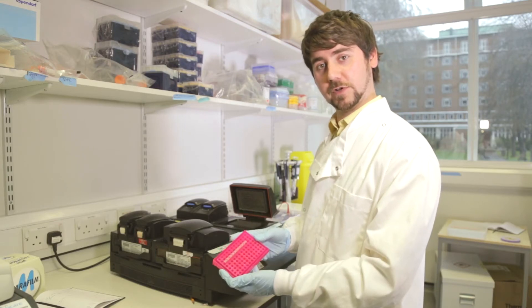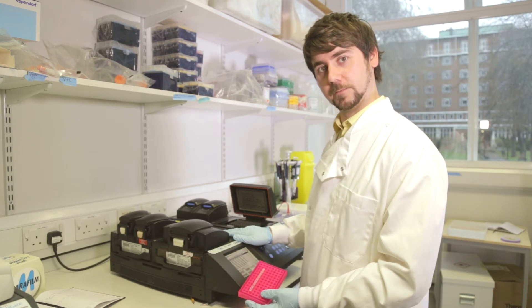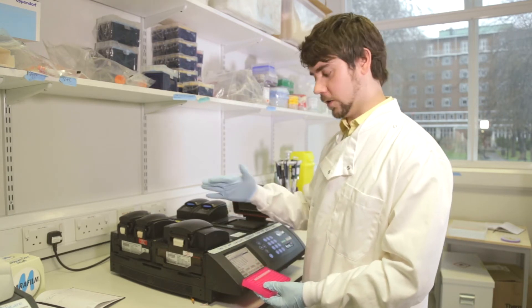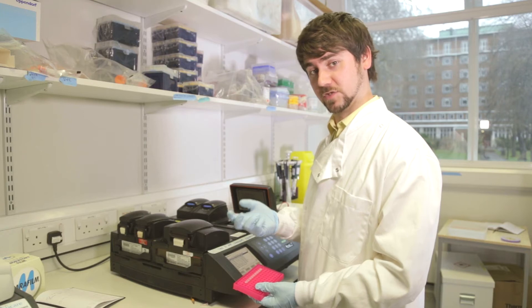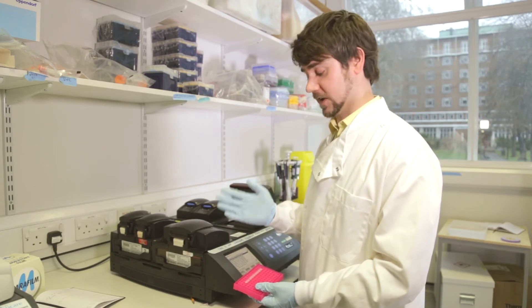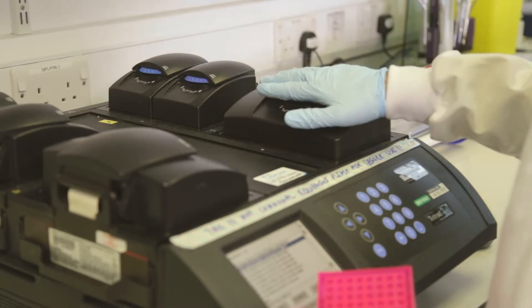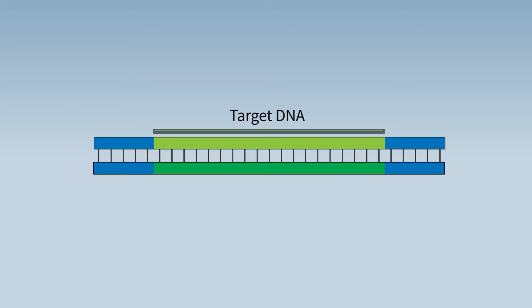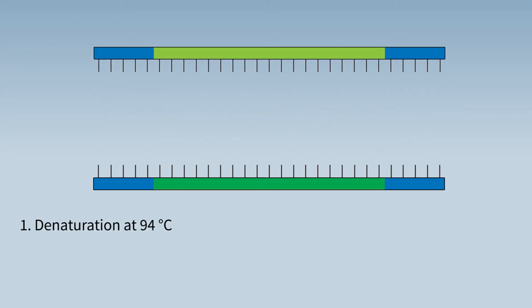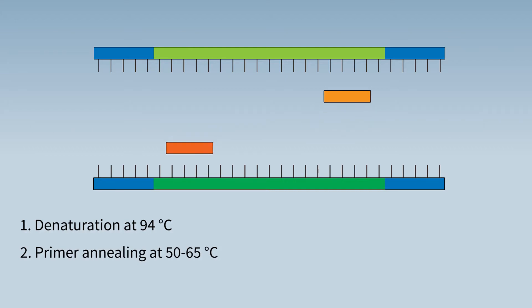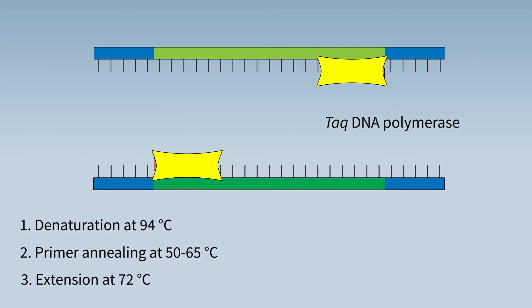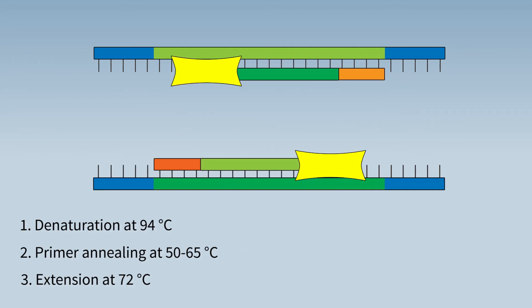Now we have our PCR reaction set up and ready to go, we can put it onto the thermocycler. An important thing to note is that while this machine thermally cycles and amplifies the DNA, the enzyme we've used — Taq, from Thermus aquaticus — is thermostable, so it will not be degraded by the thermocycling. The program runs through 30 cycles each with three stages: denaturation, where the DNA molecules are separated; annealing, where our primers bind to the region of interest; and extension, where Taq polymerase amplifies the DNA and incorporates the new dNTPs.